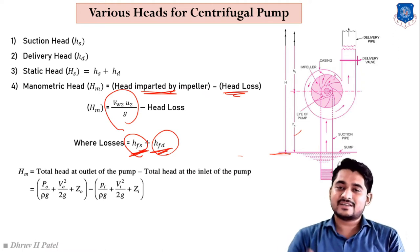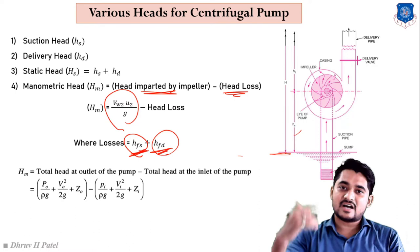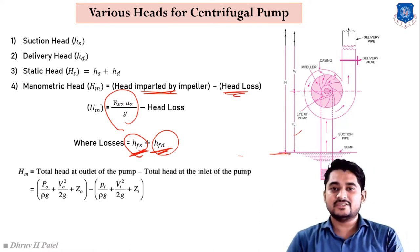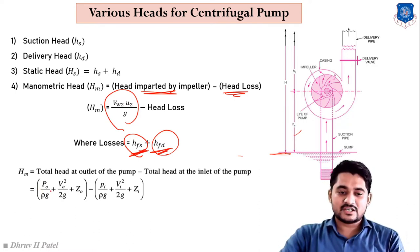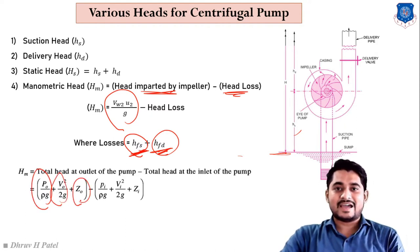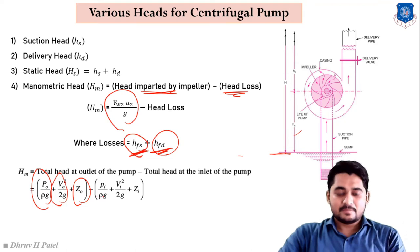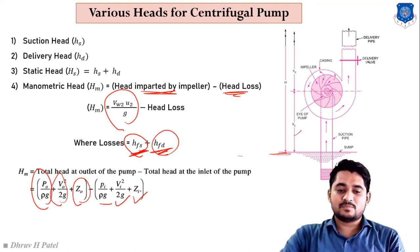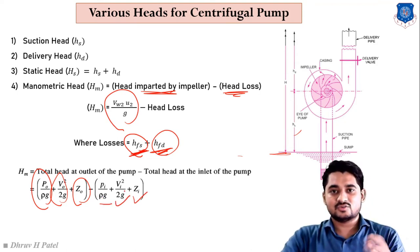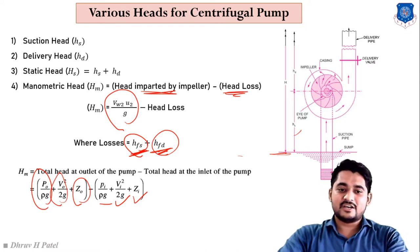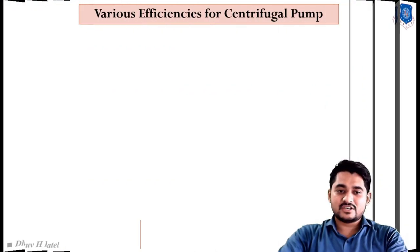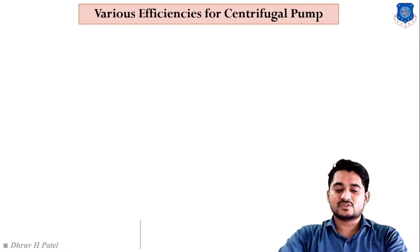Manometric head can also be represented as total head at the outlet minus total head at the inlet of the pump: (p/ρg + v²/2g + z) at outlet minus (p/ρg + v²/2g + z) at inlet.